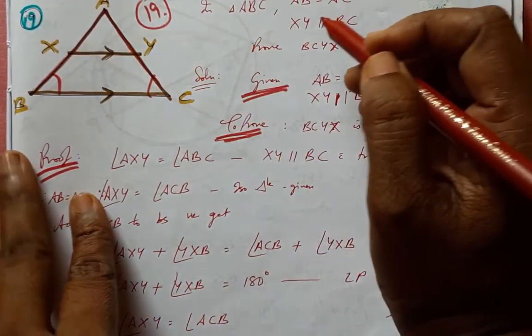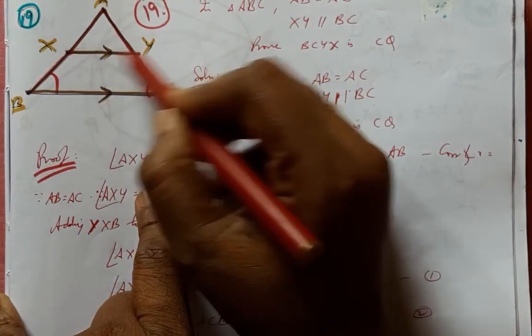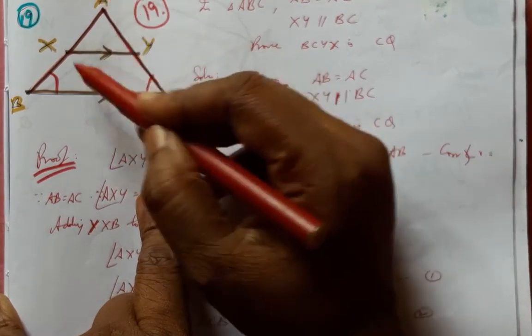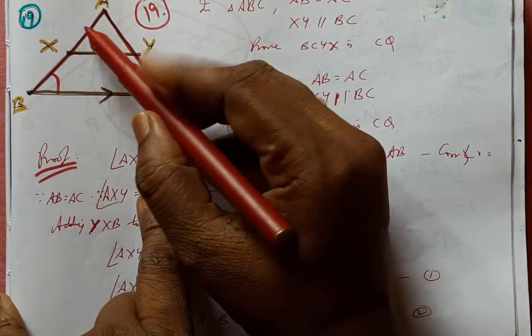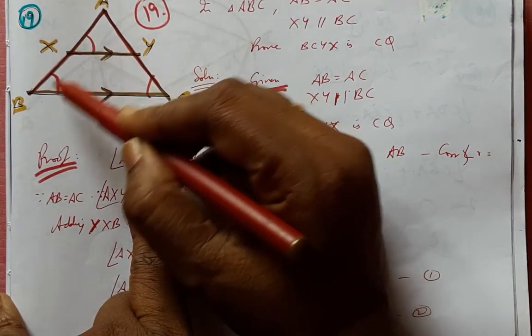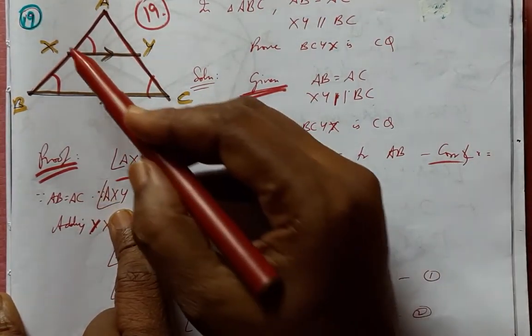First we should know that XY parallel BC with AXB as transversal, so these two angles are equal, being corresponding angles. That has been elaborated here.